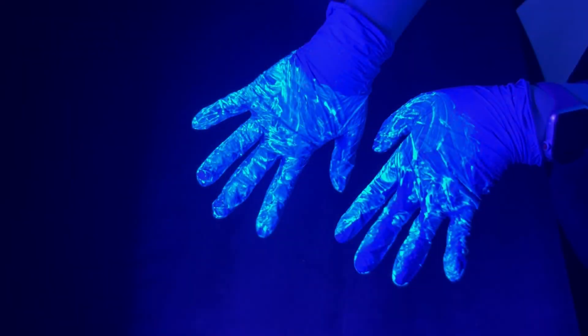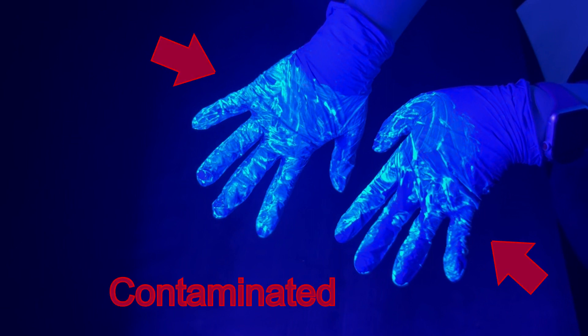After you've finished with whatever work had to be done, the outside of the gloves will be contaminated. Throughout this video, contamination will be shown under black light, and will be represented by the fluorescent solution you can see here, on these contaminated gloves.